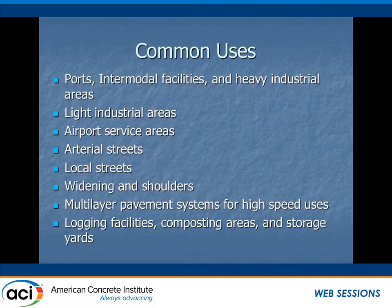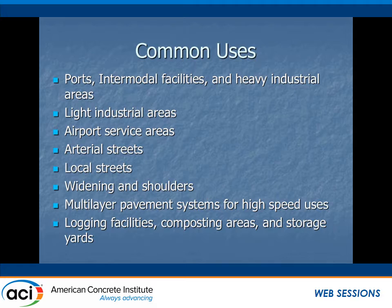Common uses have traditionally been things like ports, intermodal facilities, and heavy industrial areas — a very economical way of doing acres of heavy-duty pavement relatively quickly. But there has been some branching out into other areas: lighter industrial areas, in some cases airport service areas, a fair amount of use for arterial streets and local streets, widening and shoulder applications, and multi-layer pavement systems for high-speed uses. Traditionally also a lot of use for logging facilities, composting areas, and storage yards.